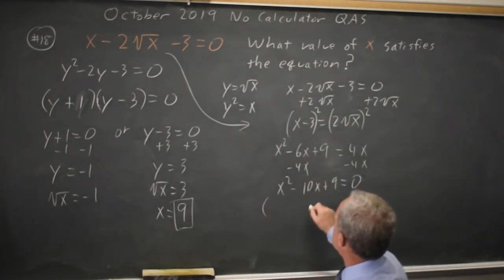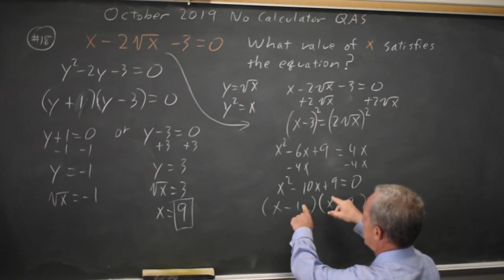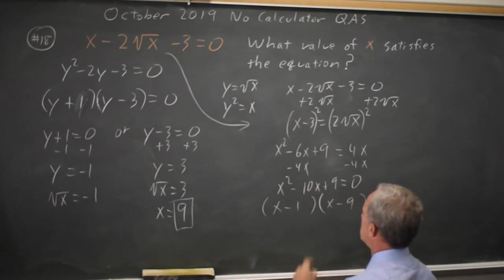And that factors. x minus 1, x minus 9. And FOIL gives me x squared minus 9x minus another x is minus 10x plus 9.